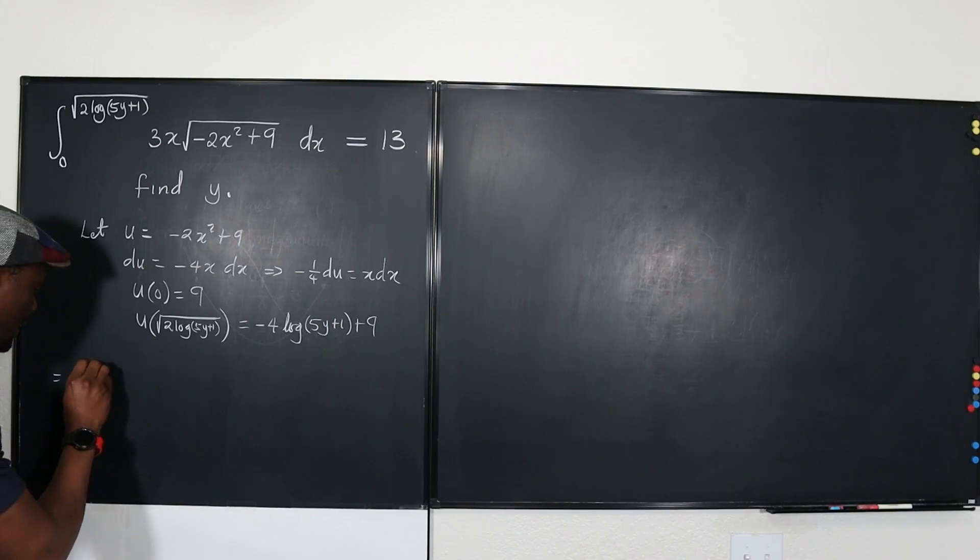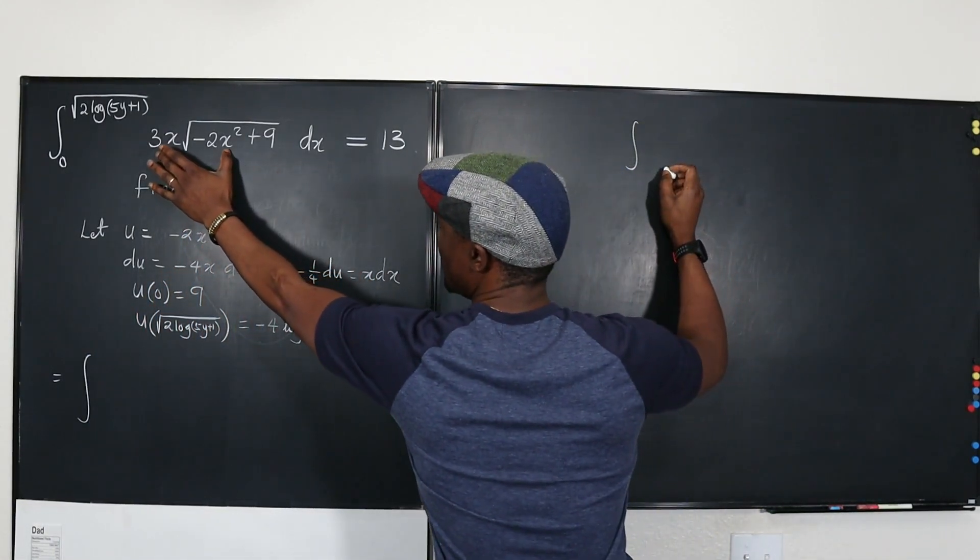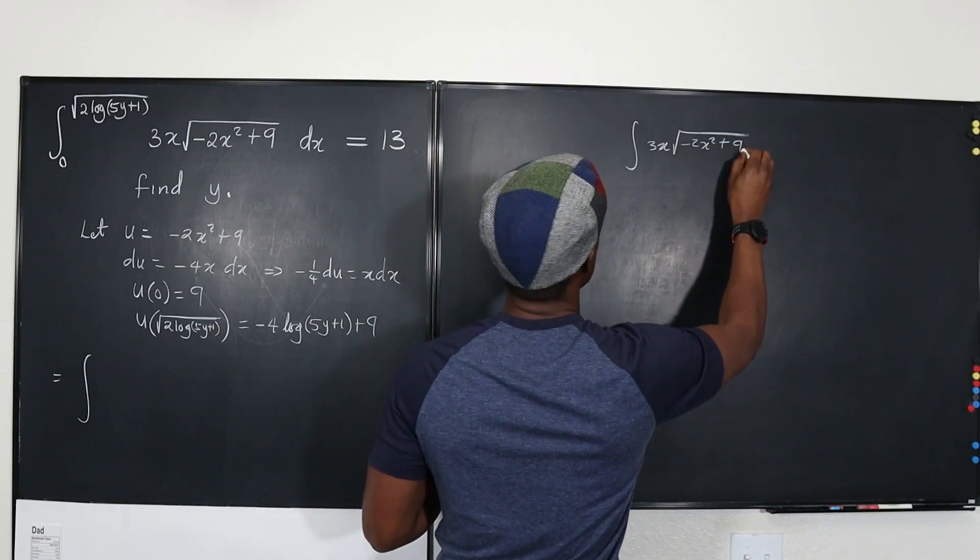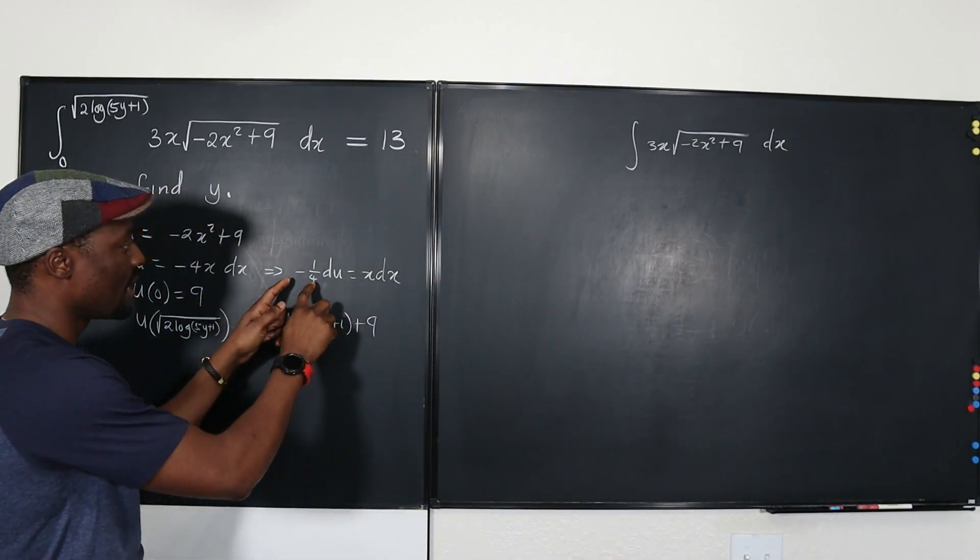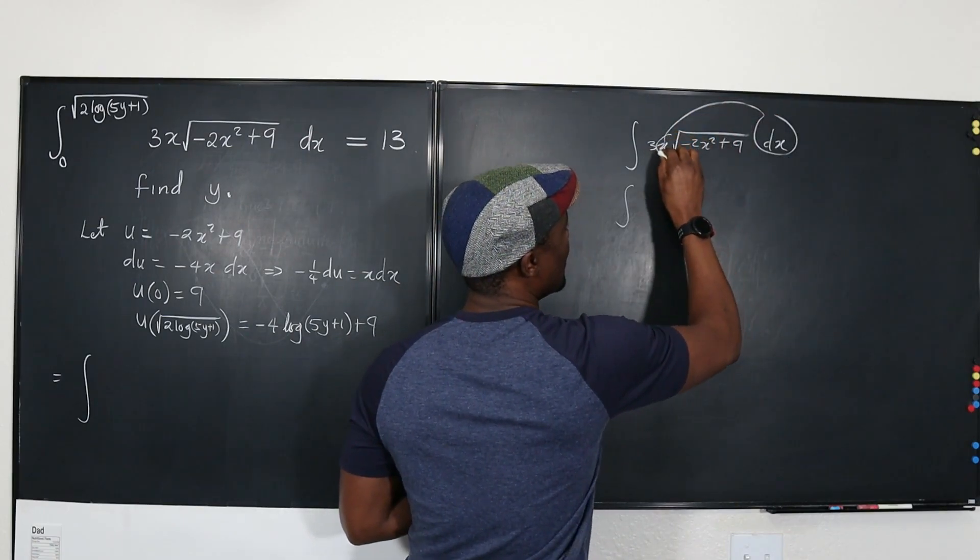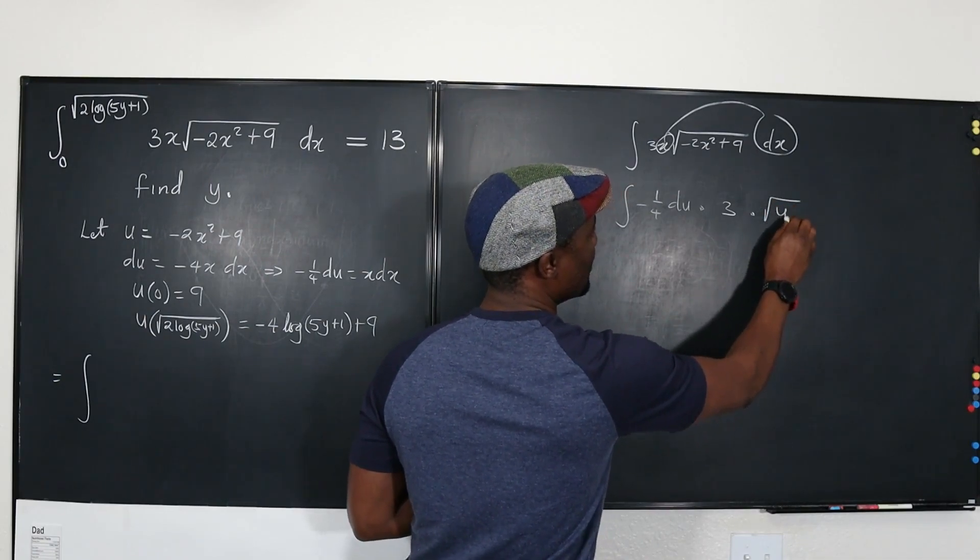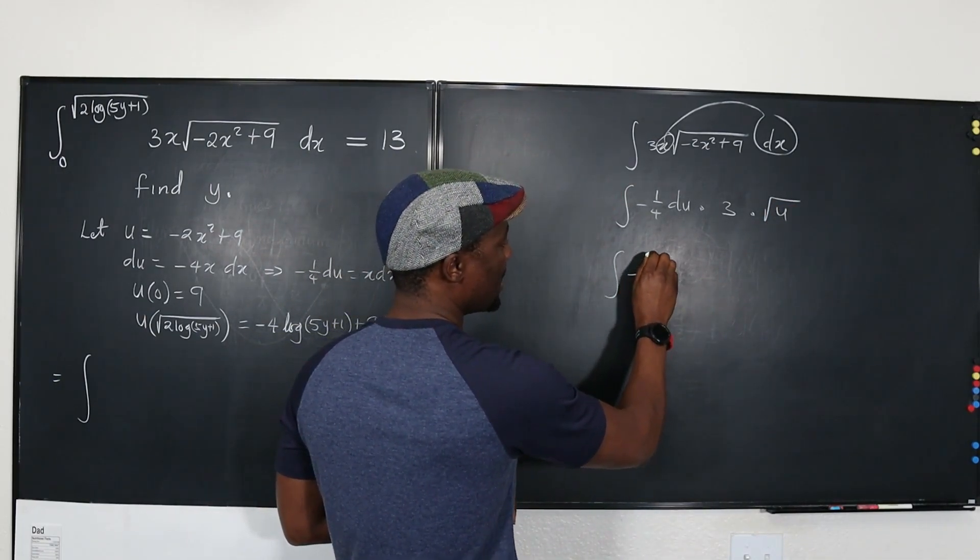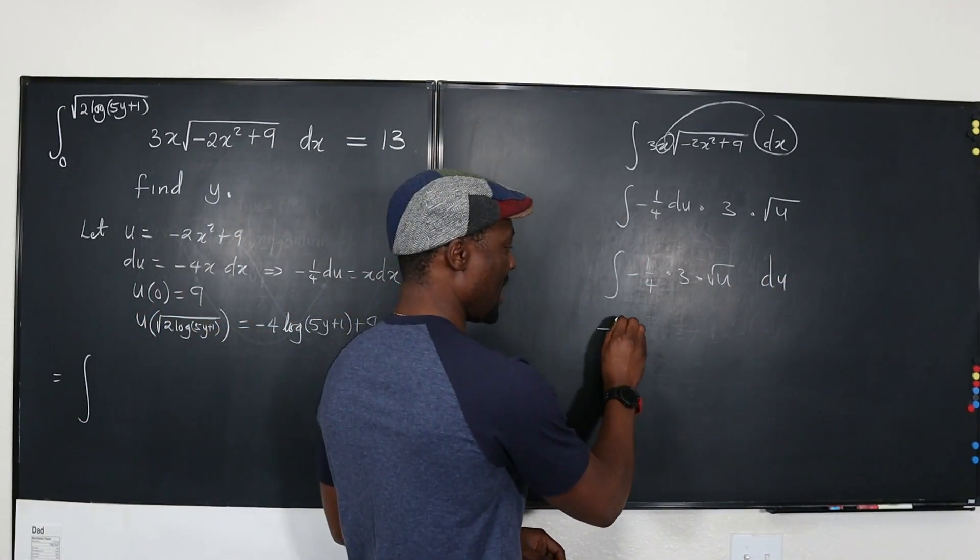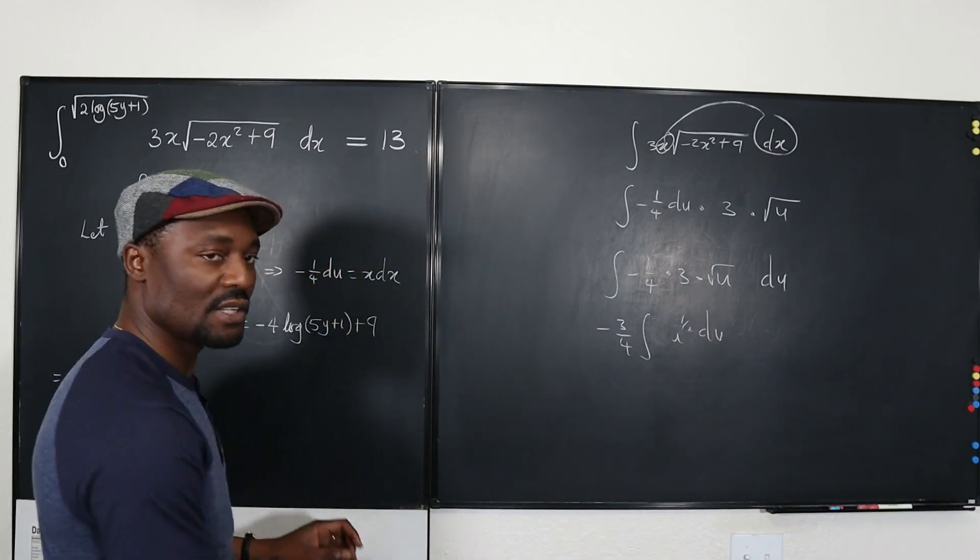So this problem can be rewritten as the integral. So if we clean up, let's clean this up first for the u substitution. I'm going to write 3x, the square root of negative 2x squared plus 9, and then I have dx. But we already said that x dx can be replaced by negative 1 fourth du. So this and this will be replaced by negative 1 fourth du, and then I have 3, and then I have the square root of u. So the arrangement is the integral of negative 1 over 4 times 3 times square root of u, then du. That's the better arrangement. So this is going to be negative 3 over 4 integral of square root of u du. Well, square root of u, we can write as u to the 1 half. And basically, that's what I'm going to be integrating here.